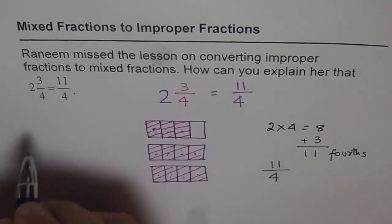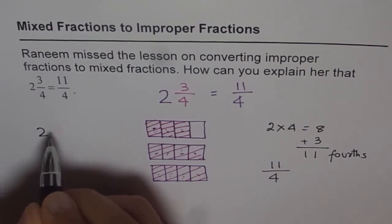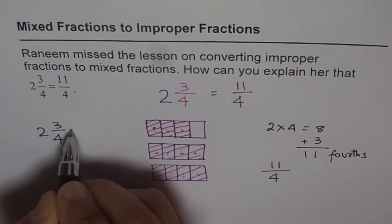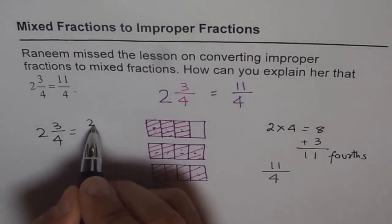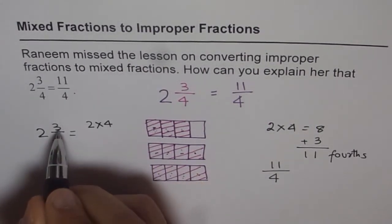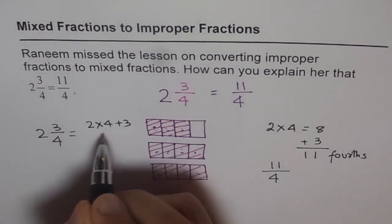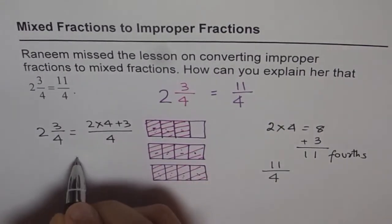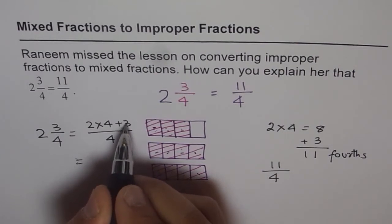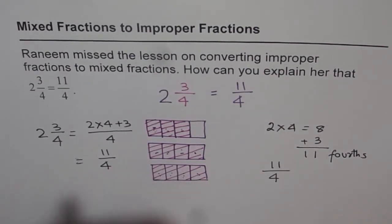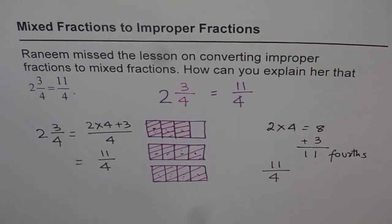Let me do it once again for you. We have the number to start with: 2 3/4. What we did was, in the numerator, we wrote 2 times 4 and then we added 3. These were fourths. So we got 2 times 4 is 8, plus 3 equals 9, 10, 11. We got 11/4. That is another way to show that the mixed number 2 3/4 is the same as 11 fourths or 11/4.